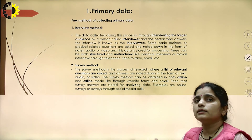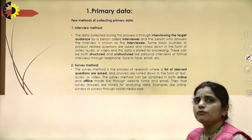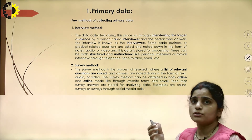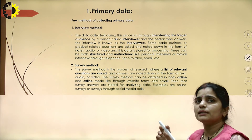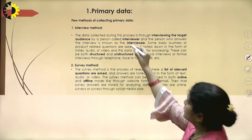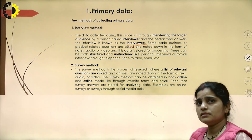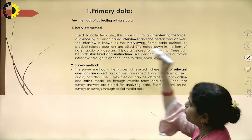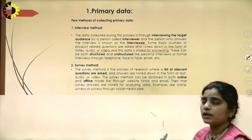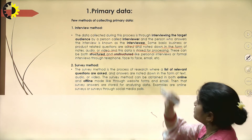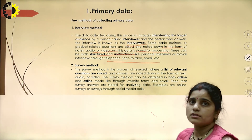The first method to collect primary data is the interview method. The data collected during this process is gathered by interviewing the target audience. The person conducting the interview is called the interviewer, and the person answering is the interviewee. Some basic business or product-related questions are asked and noted in the form of notes, audio, or video, and then this data is stored for further processing. These interviews can be personal or formal, conducted via telephone, face-to-face, or email.